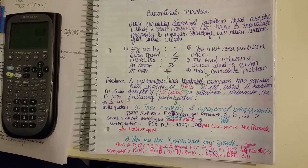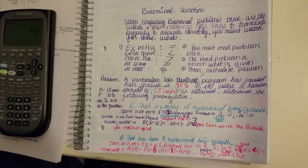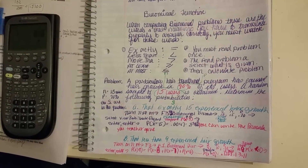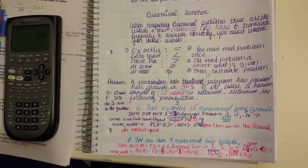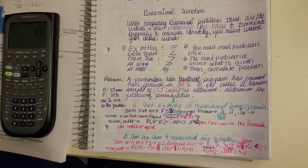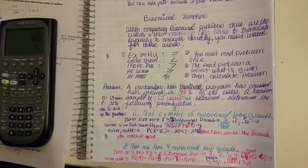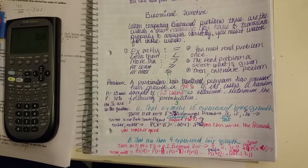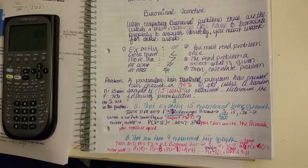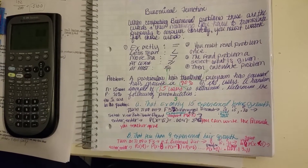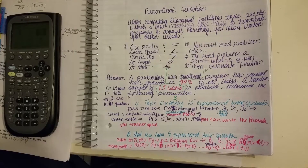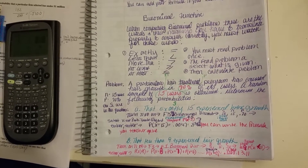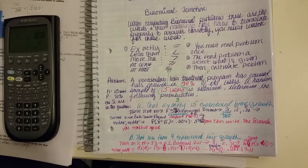One of the most important things you need to know when computing binomial problems is these words and their meanings. You have to translate them properly to answer correctly. Watch for these words: 'exactly' means equal; 'less than' means less than; 'more than' means greater than; 'at least' means greater than or equal to; and 'at most' means less than or equal to.